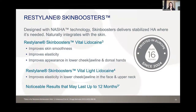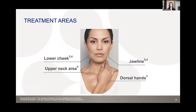Skin Boosters — Restylane Vital and Restylane Vital Light — are designed with NASHA technology to deliver stabilized HA and naturally integrate within the skin. Vital improves skin smoothness and elasticity in the lower cheek, jawline, and dorsal hands. Vital Light improves elasticity in the lower cheek, jawline, face, and upper neck. Results may last up to 12 months.